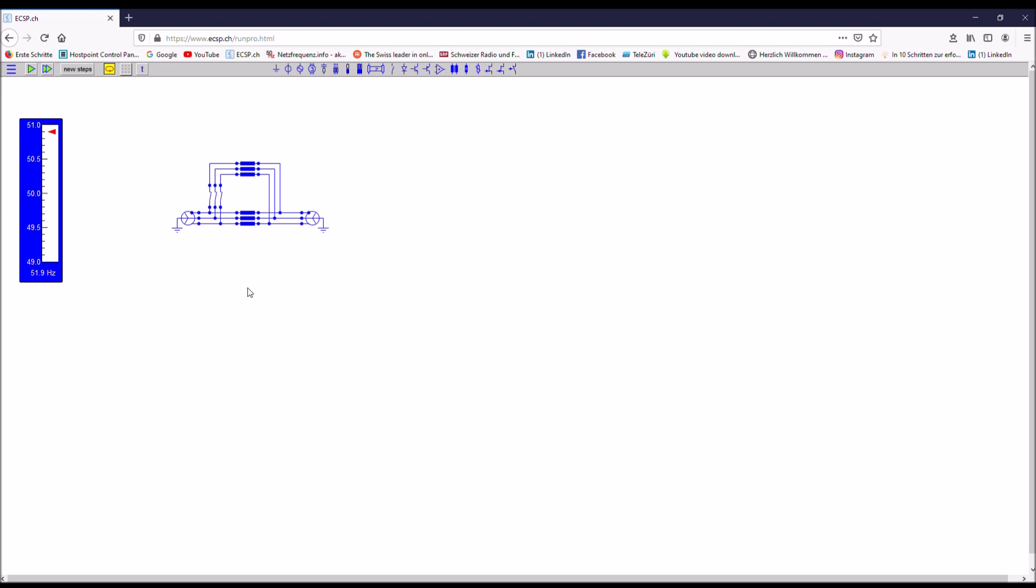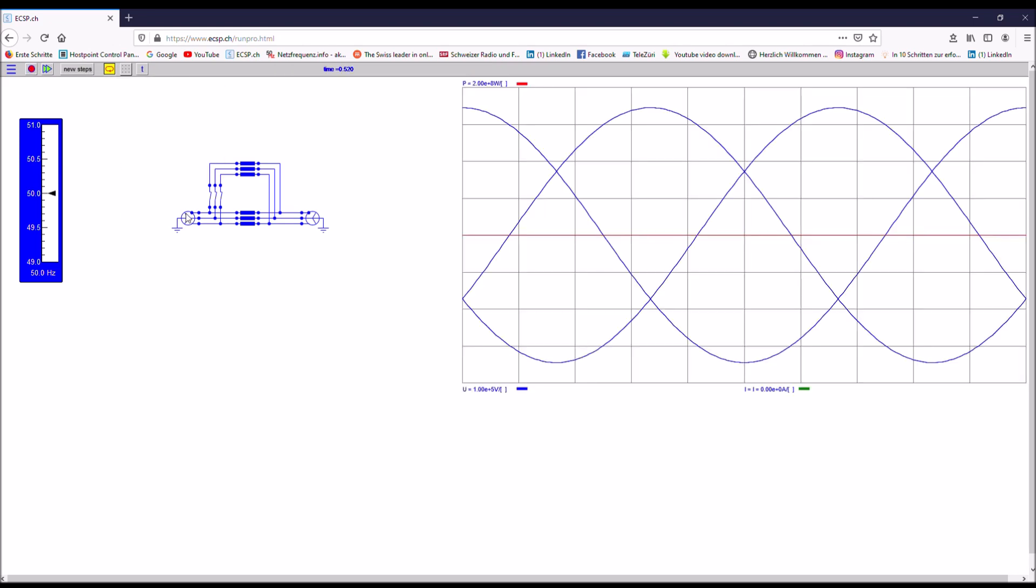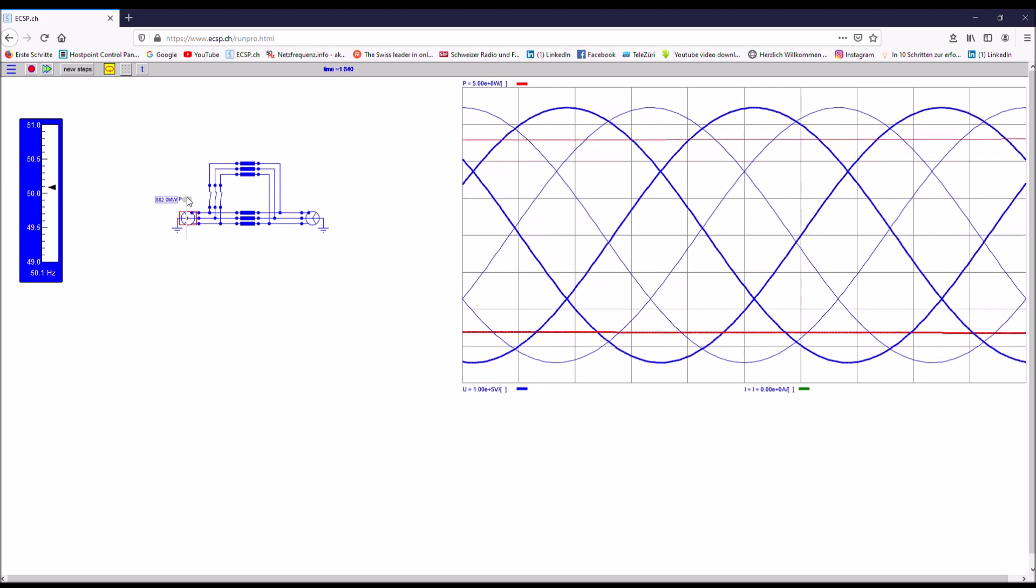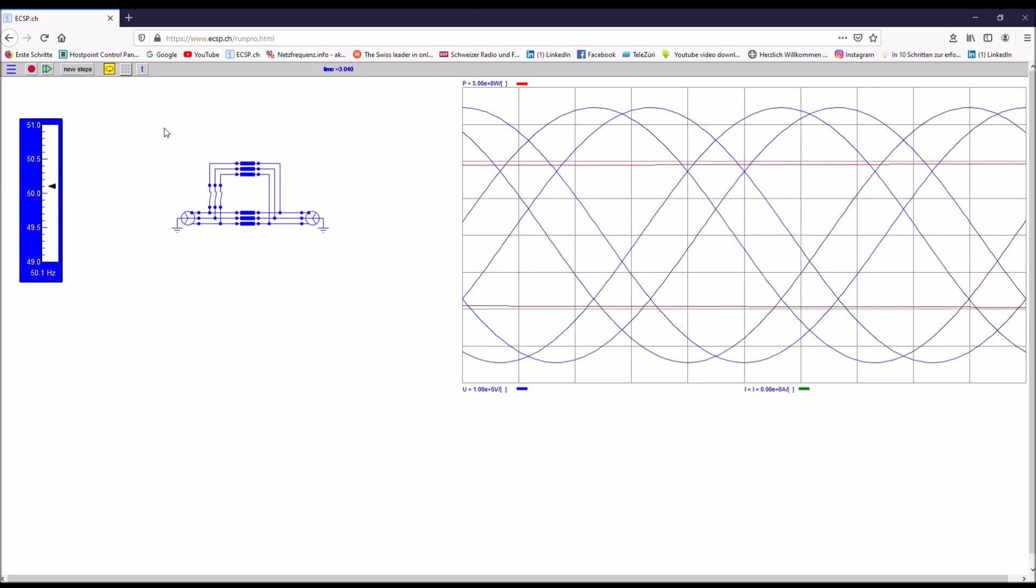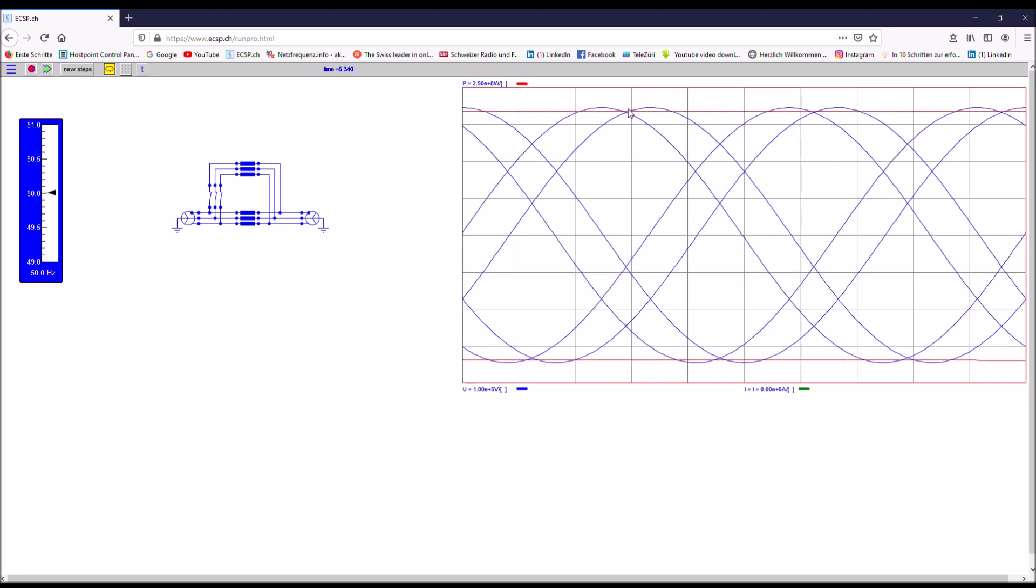Since I have now two parallel lines from one line end to the other line end, I can push double the power through the line system. And let's see what happens now if I lose one of the lines. So first I push the power to the maximum, and you can see that the phase angle between the line ends are still well below 90 degrees.